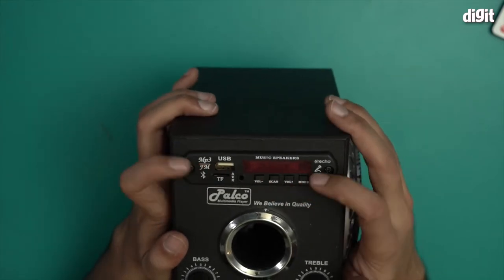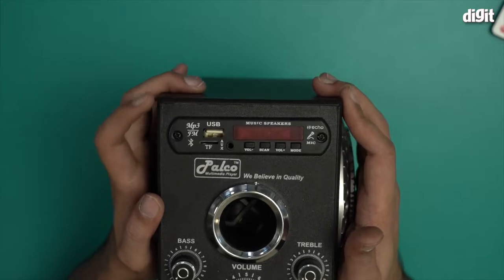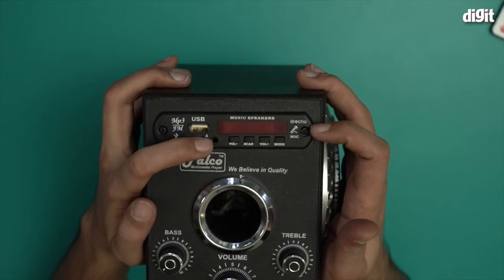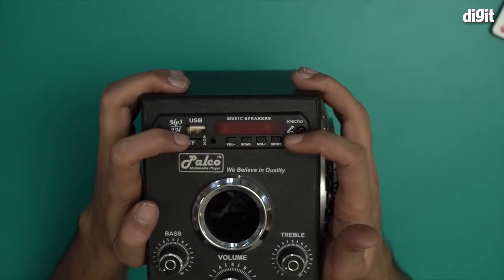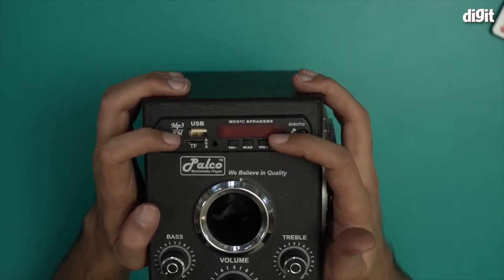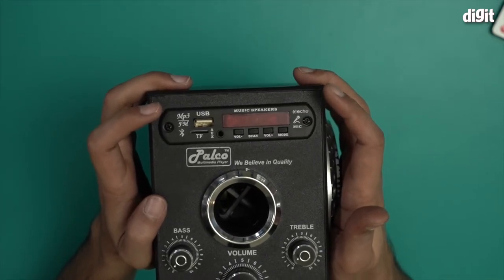On the top, you have some buttons and some ports as well. You have a USB-A port, a TF card slot, and this is the aux port right over here. Along with that, you have a volume plus minus button, a scan button for scanning different channels on FM, and mode for switching between different modes.